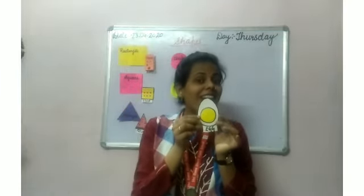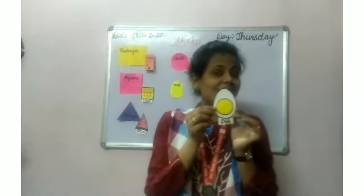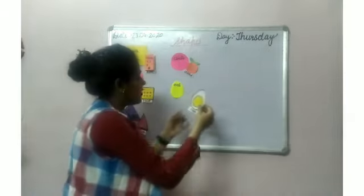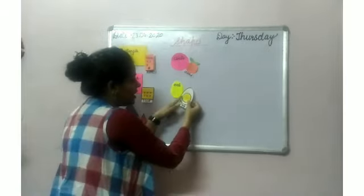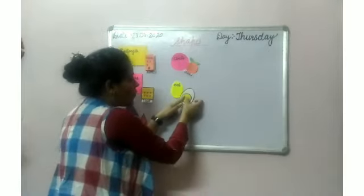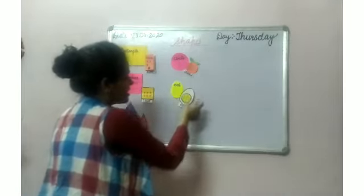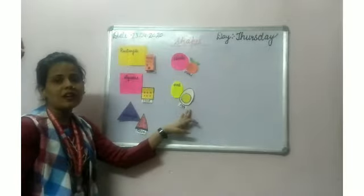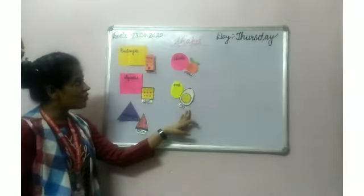What is this? This is egg. What is the shape of the egg? Oval. What is the shape of the egg? Oval. Understood?